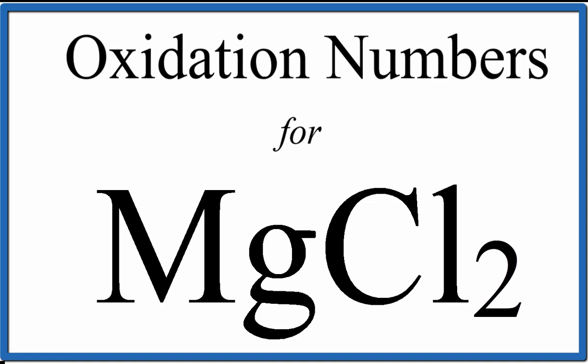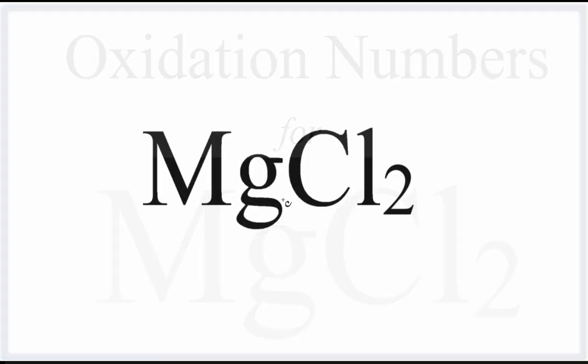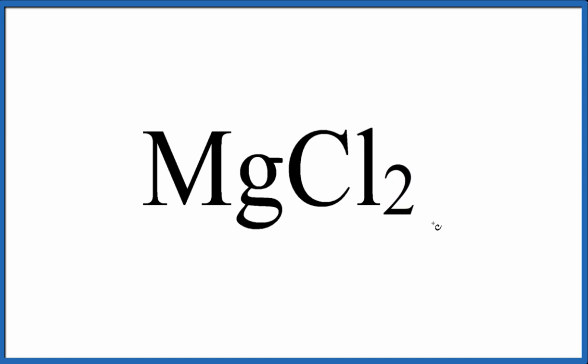For MgCl₂, magnesium chloride, if we added up all the oxidation numbers, we would get zero. If it was an ion, we'd have a plus or a minus charge up here. So everything needs to add up to zero.